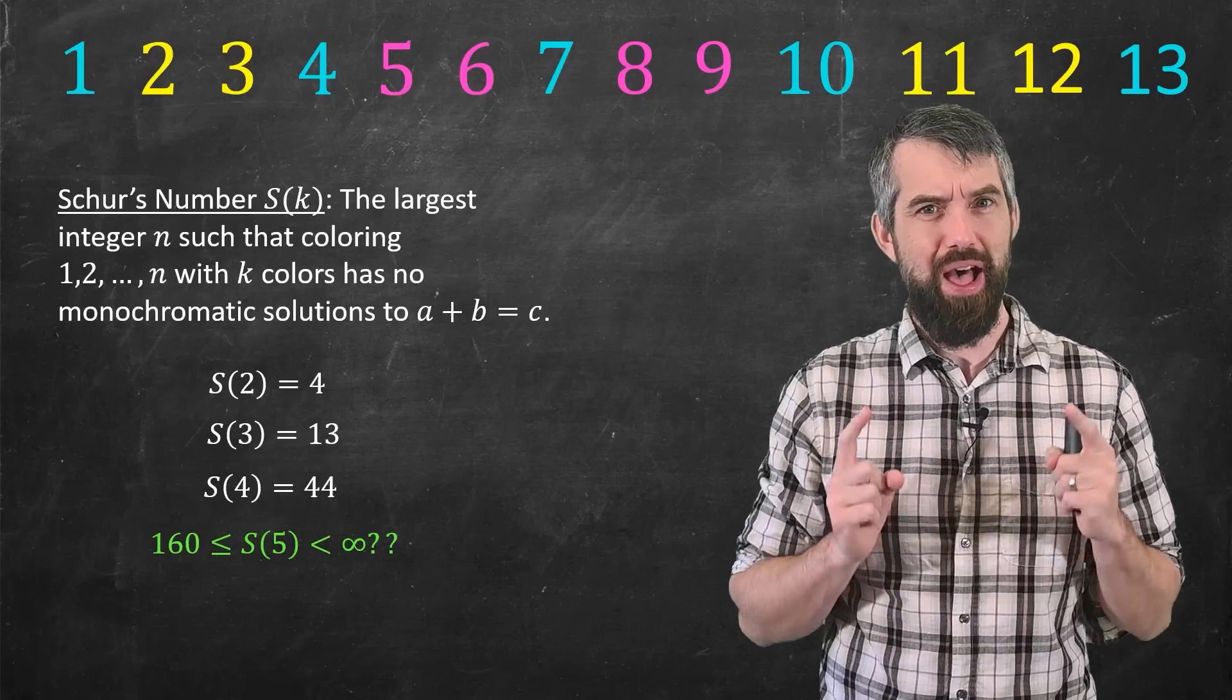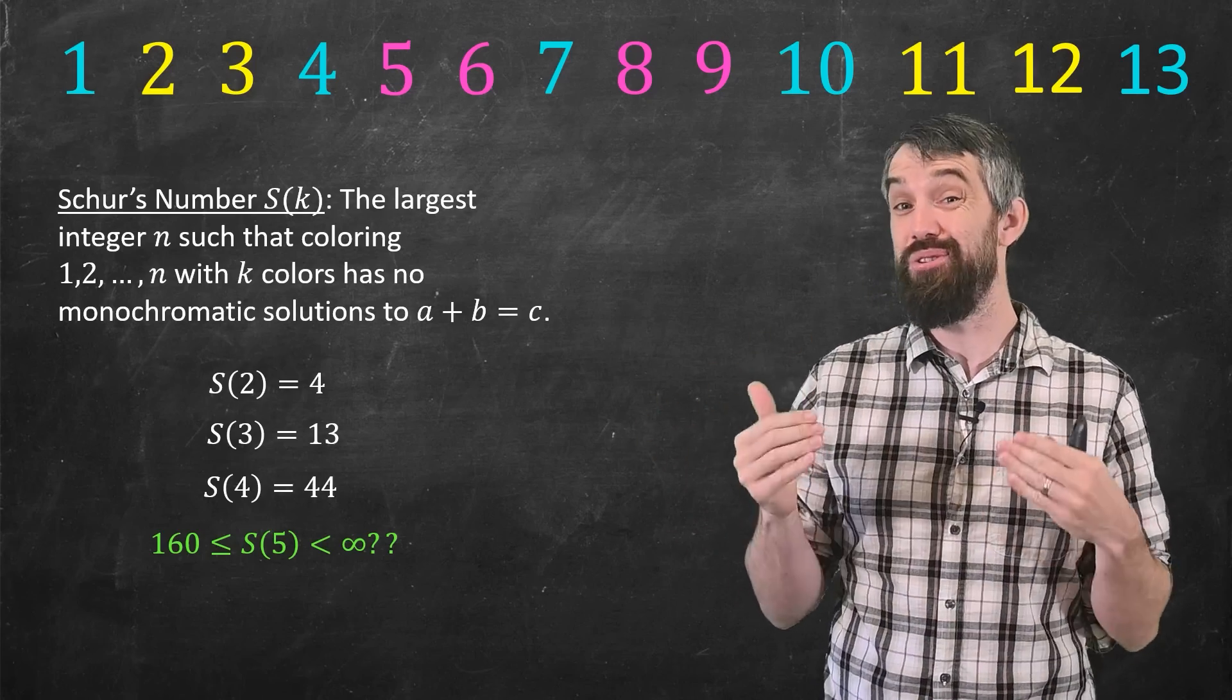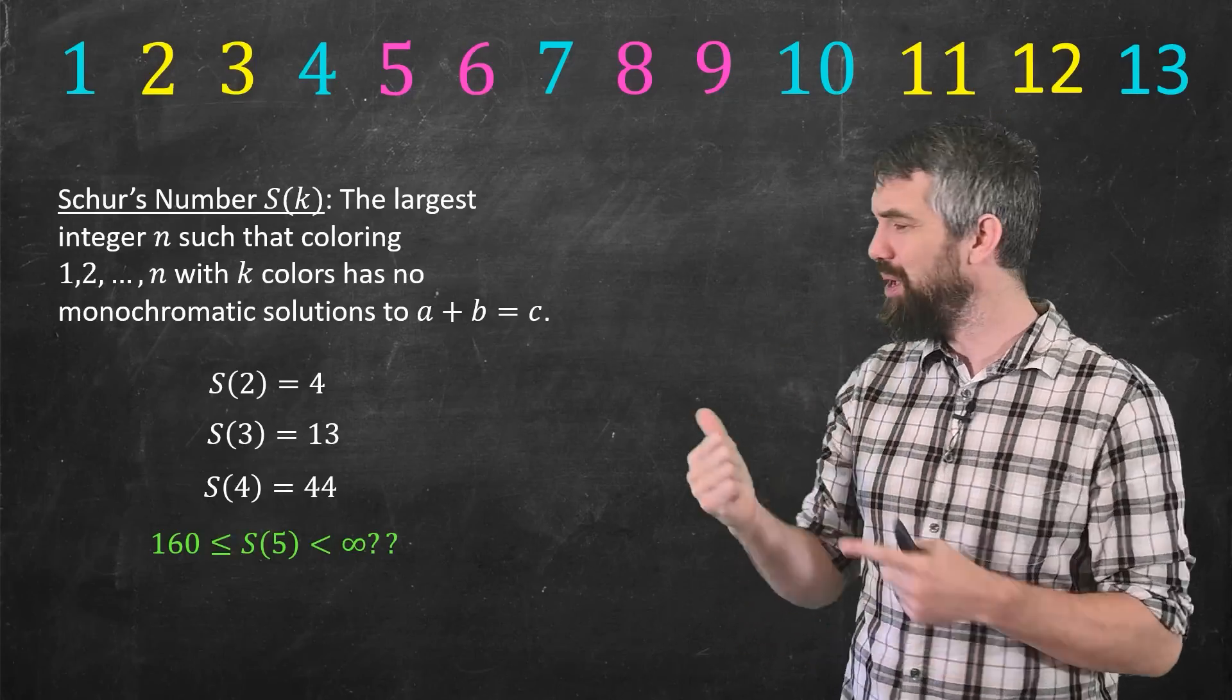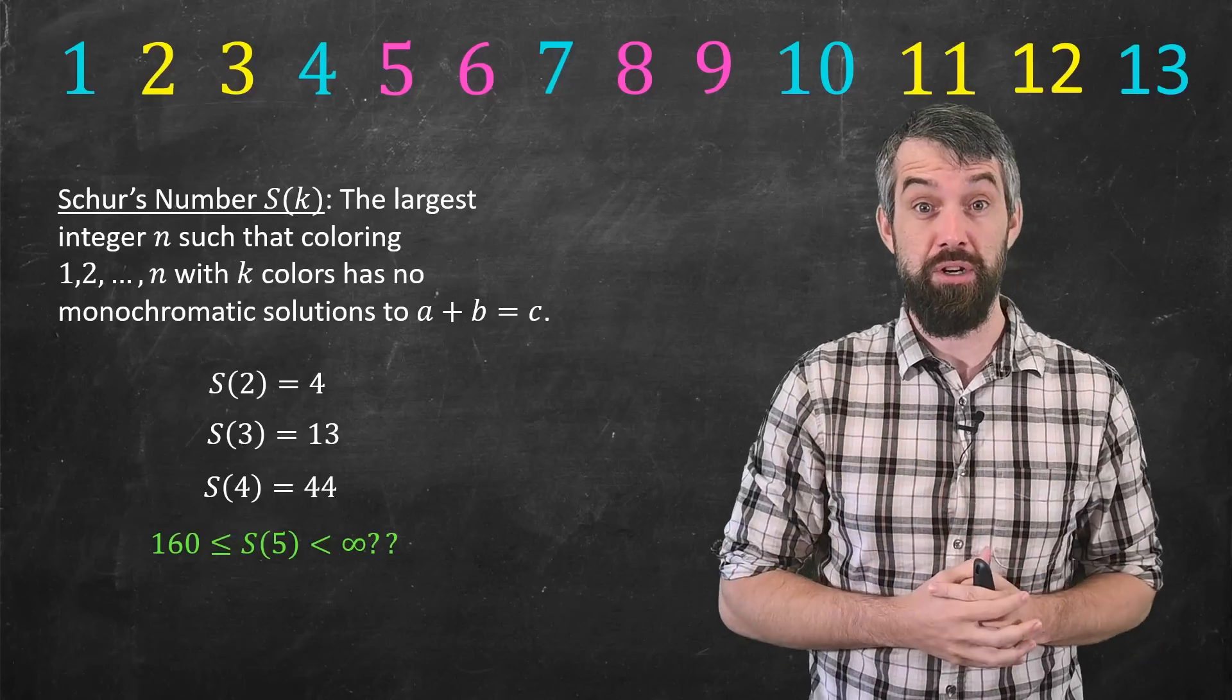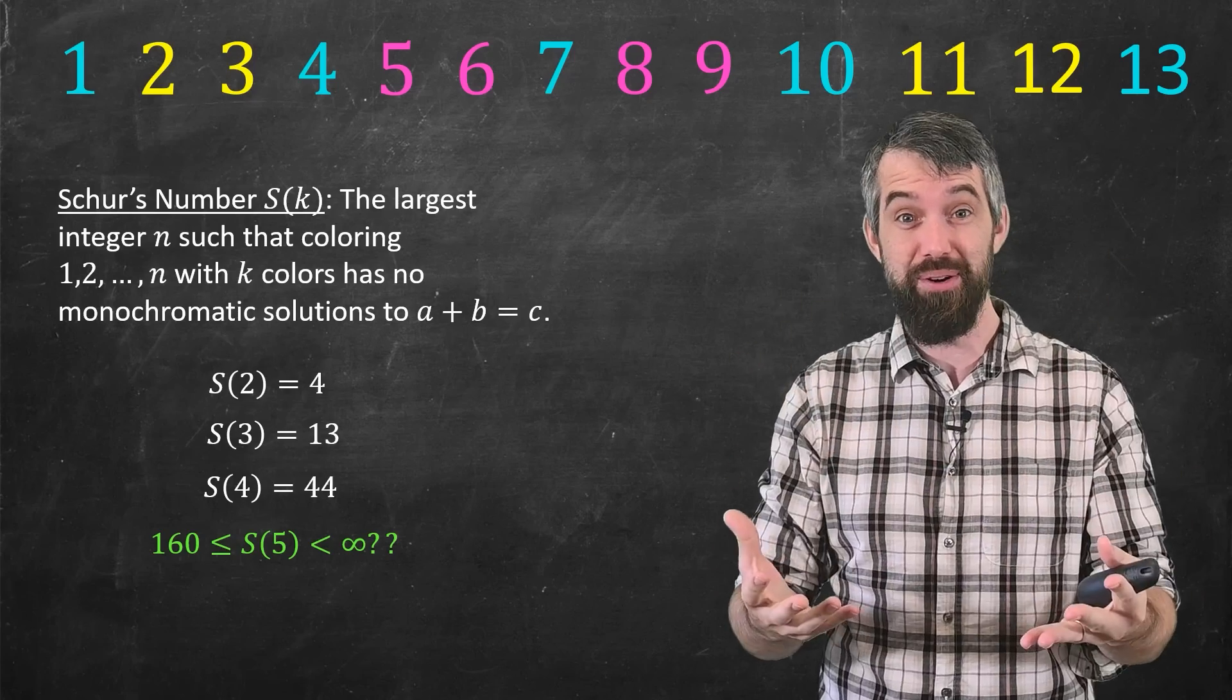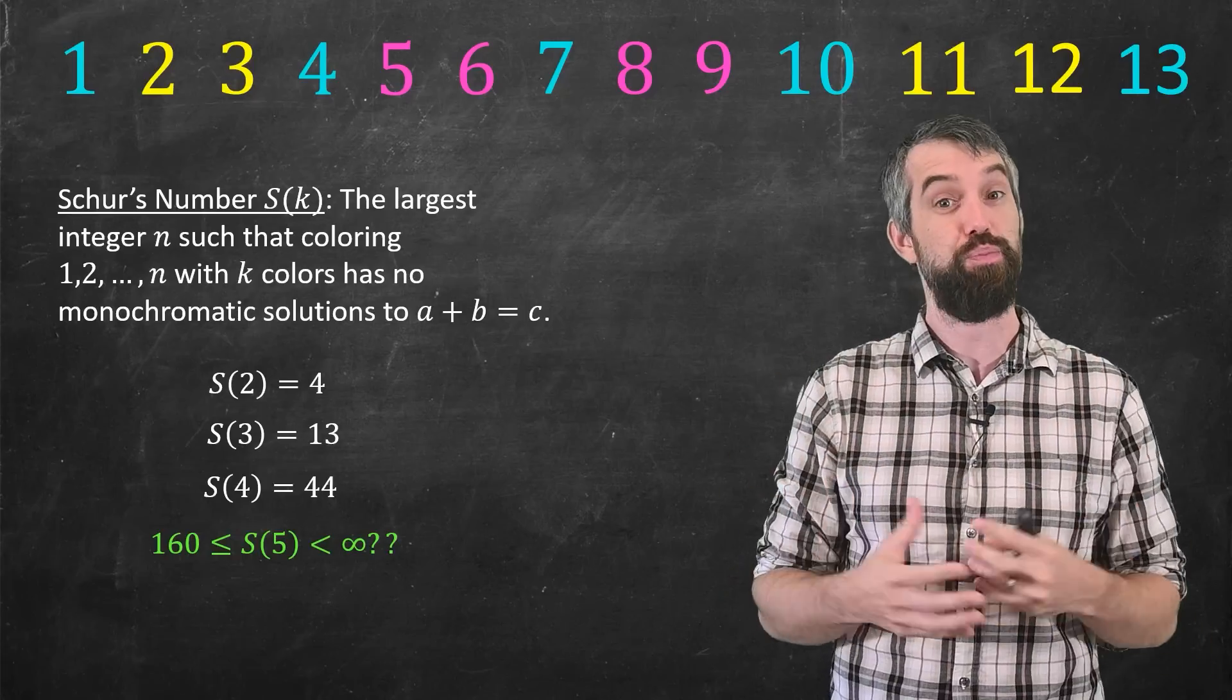The complexity involved is enormous, but it was done and got the value of 44. But for Schur number 5, the value of it was unclear for over a century. In the 90s it was found that you could color 160, an example was found. But we didn't know whether you could color 161 or above. And then we also knew that it was finite. The original Schur's theorem says that this will always happen. There will be a finite answer to it. And that is part of a branch of mathematics called Ramsey theory.